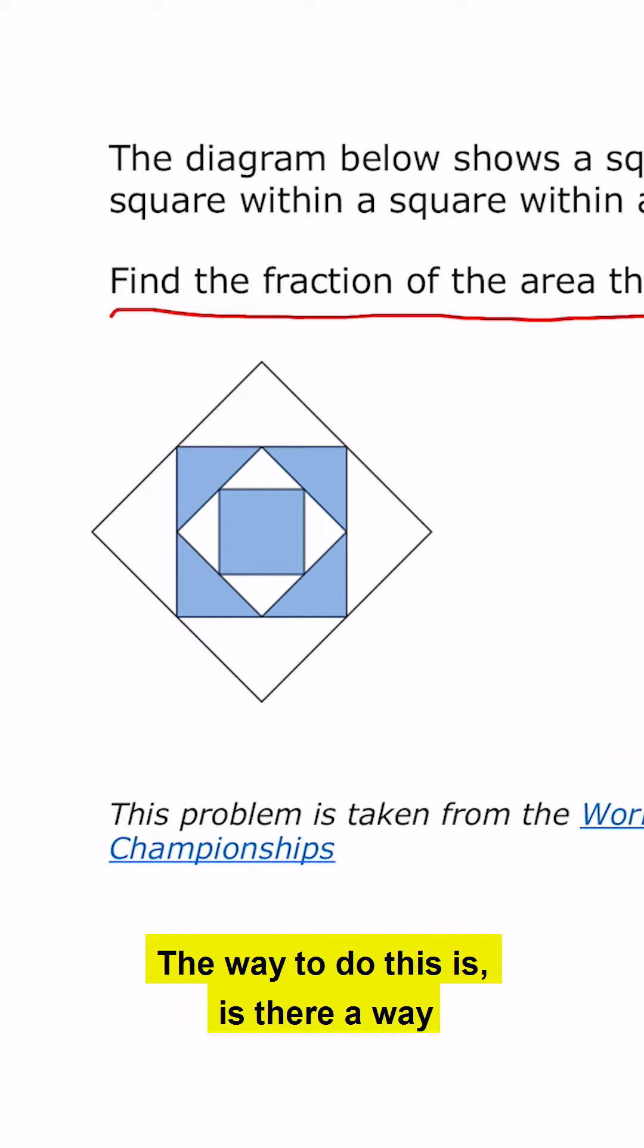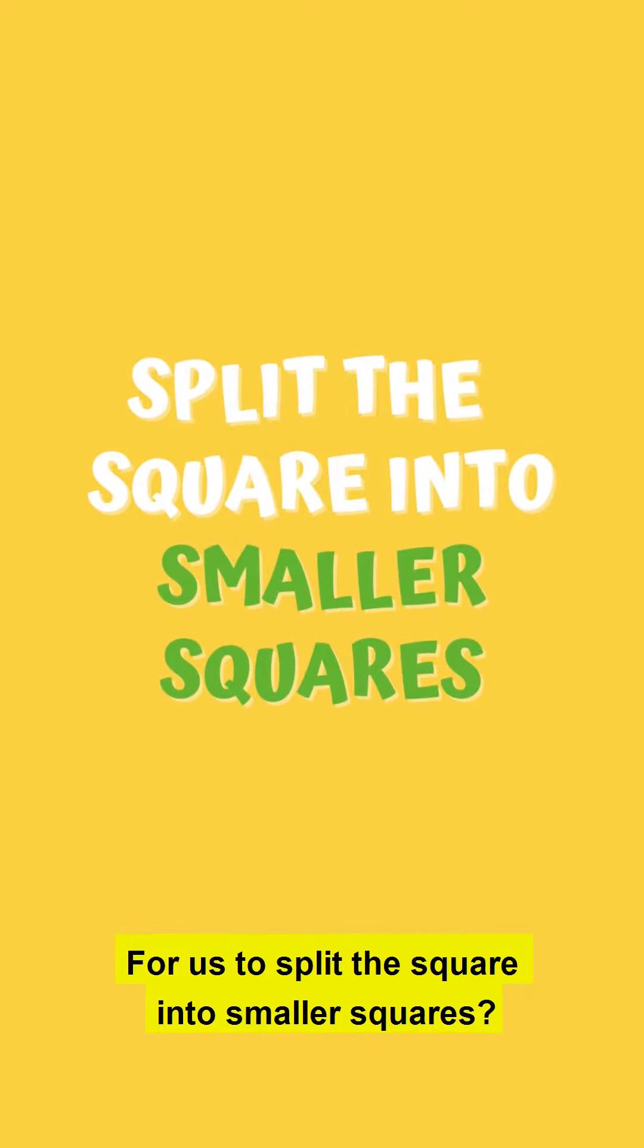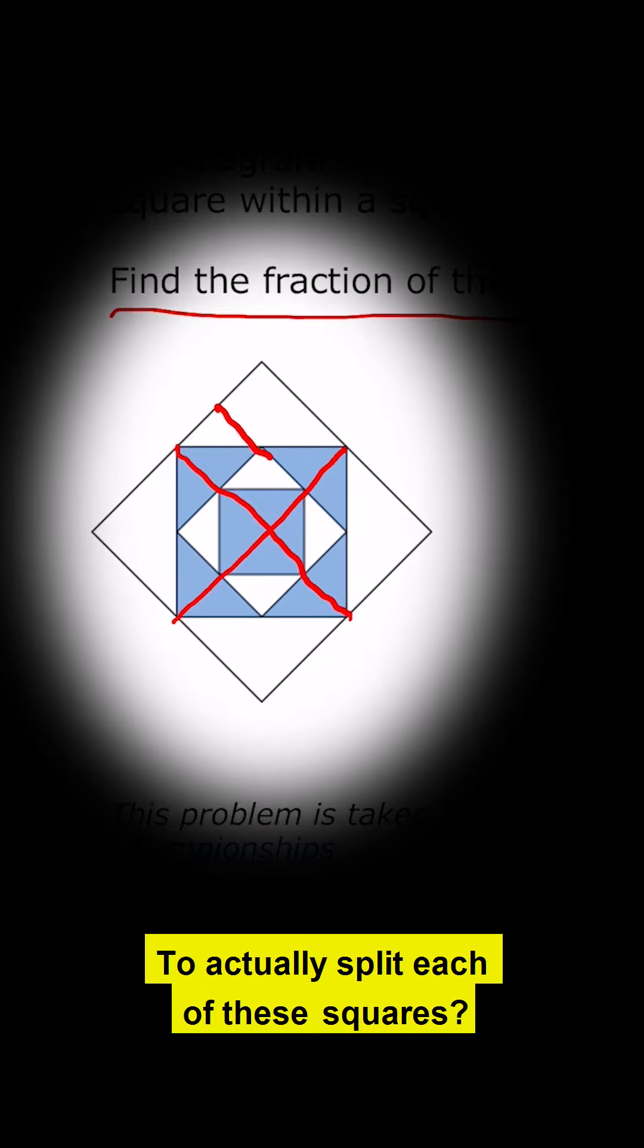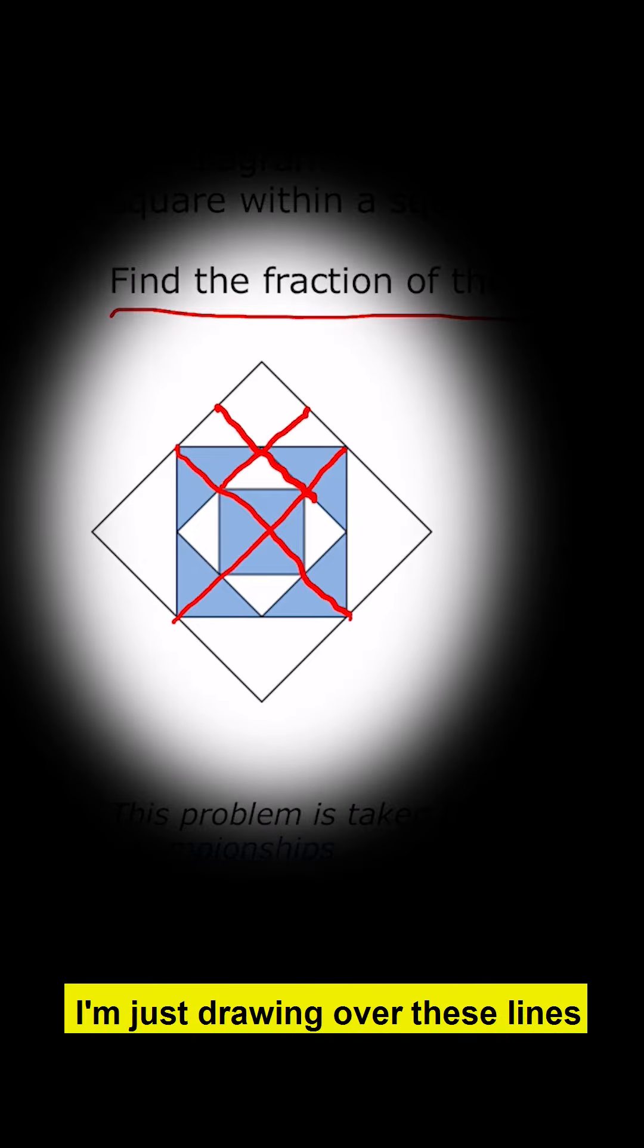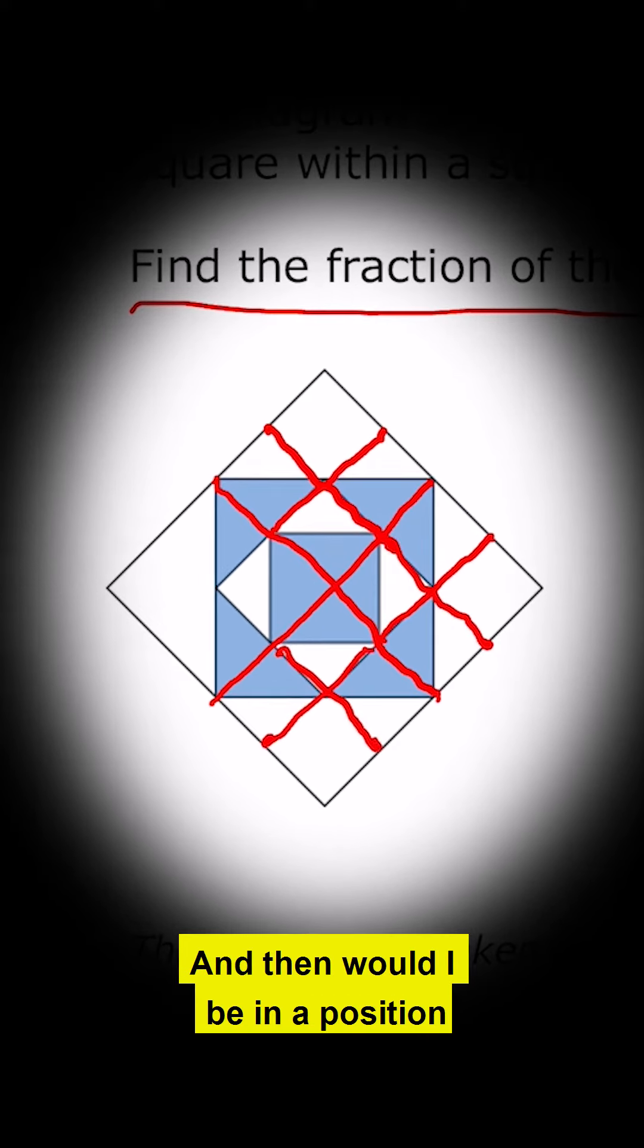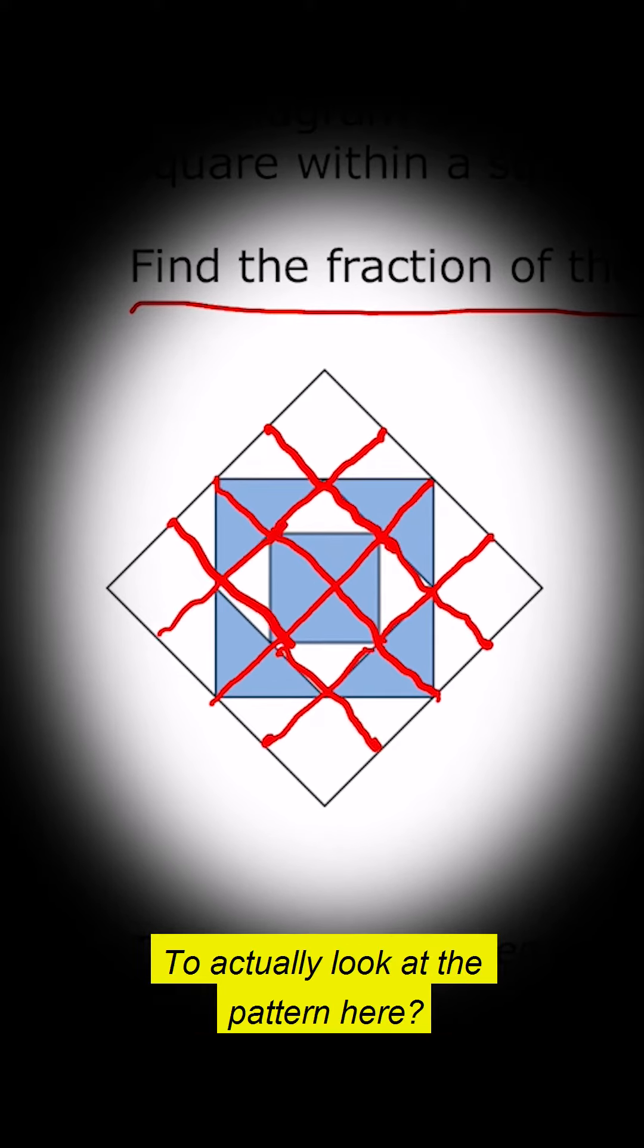The way to do this is, is there a way for us to split the square into smaller squares and split each of these squares? I'm just drawing over these lines. Would I be in a position to actually look at the pattern here?